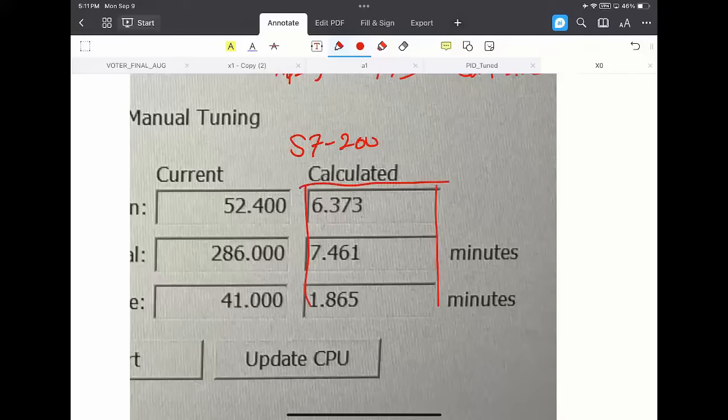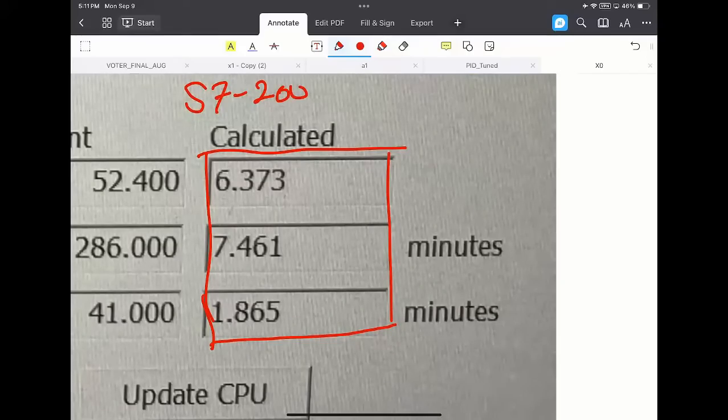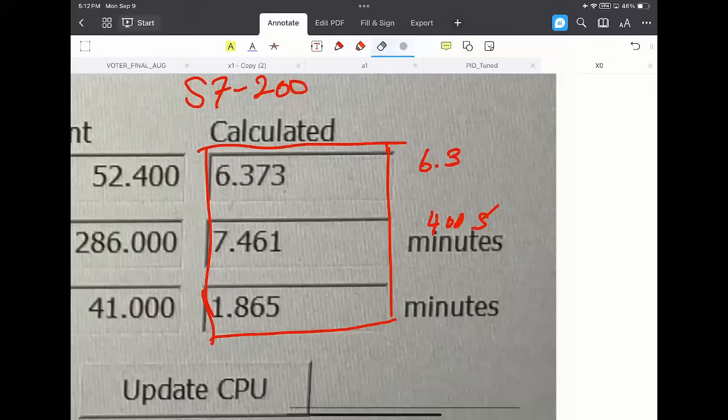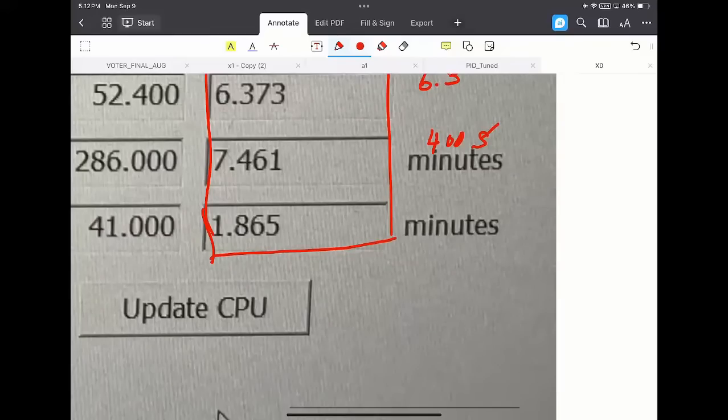These values, for me, based on my information and memory, these are aggressive values. If we put them on a heating process, we may encounter too much excessive heating and it may cause the waste of energy. The gain of 6.3 and the integration time of around 400 seconds and the derivative part, the TD of 120 seconds.